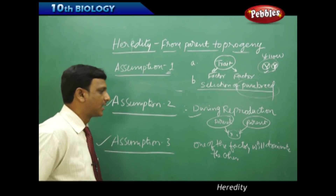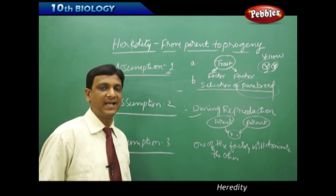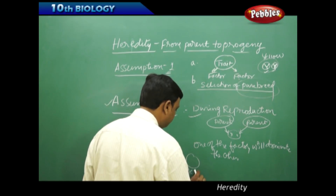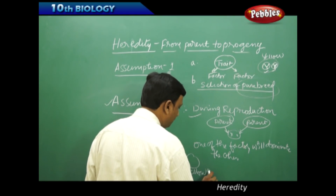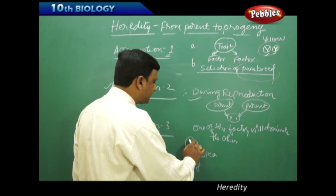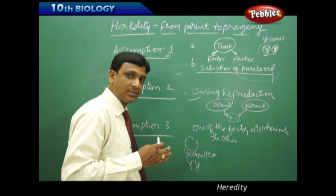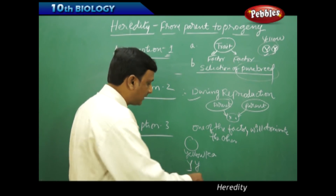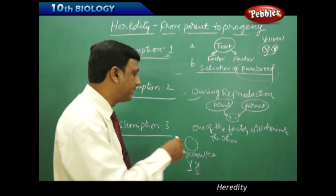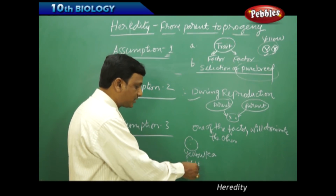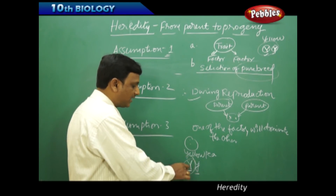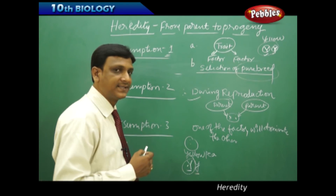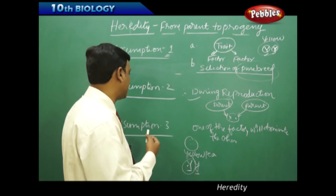Assumption 3: one of the factors will dominate the other. For example, a yellow color seed — the color of the pea is yellow, but behind the character in the two factors, one is big Y representing yellow color and the other is small y representing green. But even then no green color is seen, because the green color factor is dominated by the yellow factor. In every trait, one factor will dominate the other. That is Assumption 3.